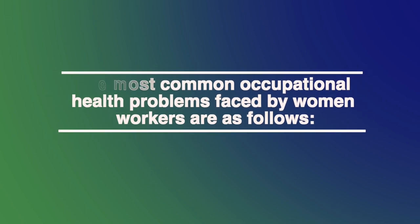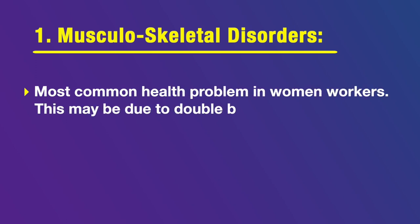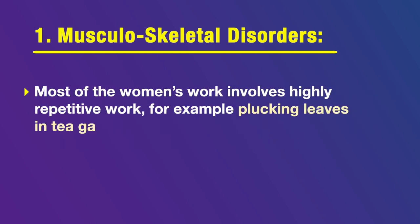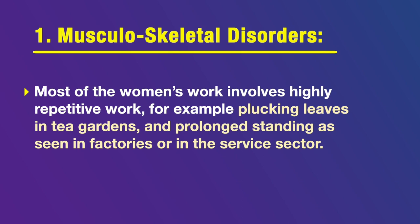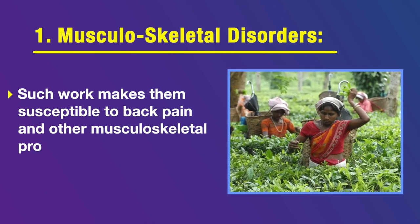The most common occupational health problems faced by women workers in industries include, first and primarily, musculoskeletal disorders. The most common health problem encountered in women is musculoskeletal disorder, due to the double burden of working at home and in the office. Most of the women's work includes repetitive tasks — for example, plucking tea leaves in a tea garden — where they may be in crouched positions or bending forward for the whole day, maybe five to six hours at a stretch. Repetitive movement and prolonged standing in factories or the service sector can make them susceptible to back pain and other musculoskeletal problems.